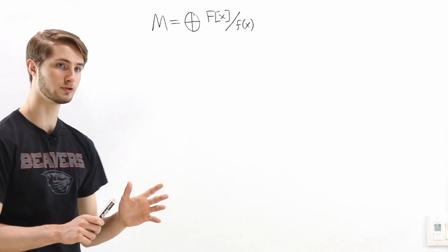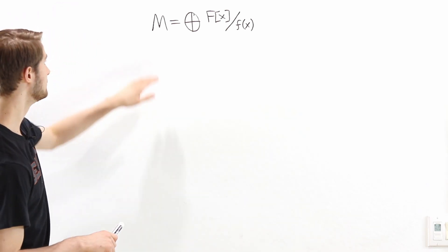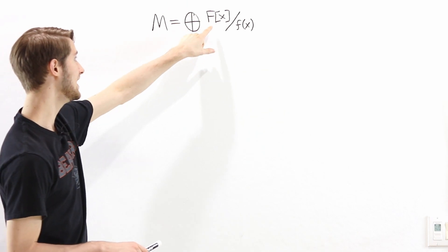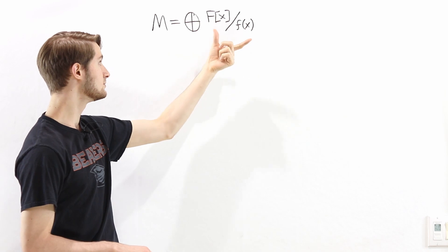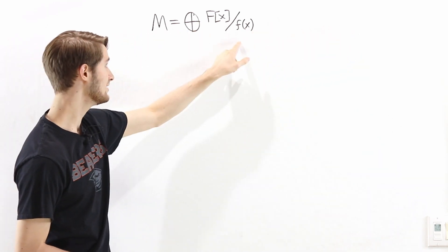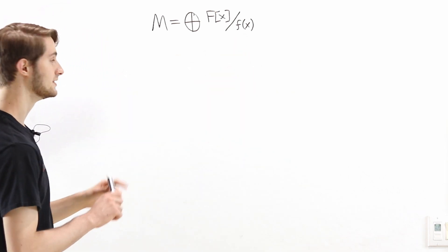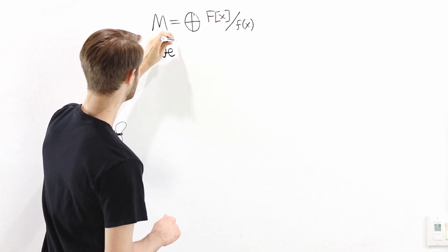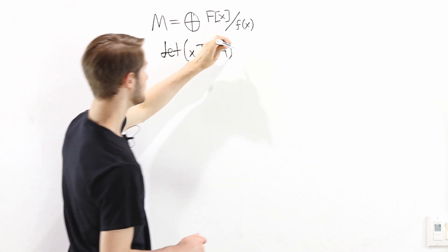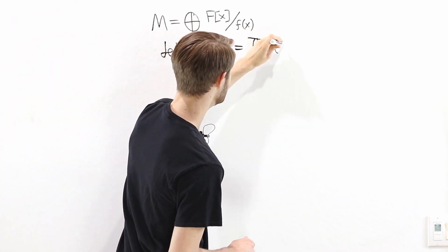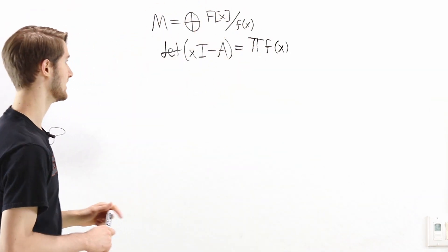We know that every matrix corresponds to a finitely generated torsion fx module, and by the structure theorem, we can write that module as a direct sum of F[x] mod a bunch of polynomials f(x). The characteristic polynomial of a matrix — the determinant of xI minus A — equals the product of these invariant factors f(x) in the quotients of the fx module.